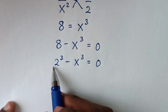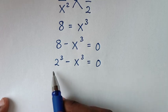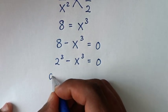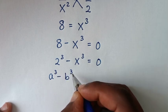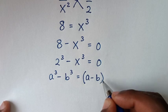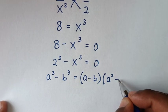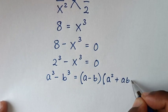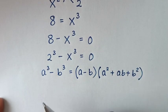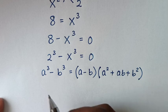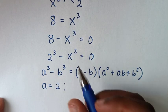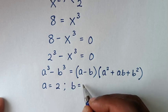Then from here, this is in the form of a perfect cube, so we'll apply the difference of cubes rule: a cubed minus b cubed equals (a minus b)(a squared plus ab plus b squared). When we compare a cubed with 2 cubed, then a equals 2, and when we compare b cubed with x cubed, then b equals x.